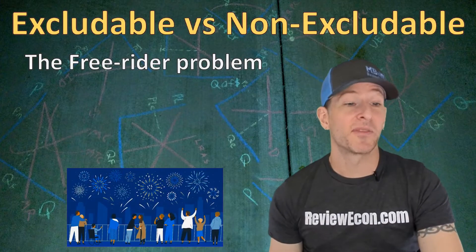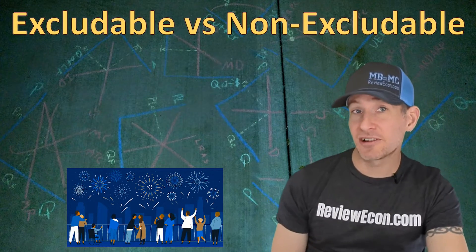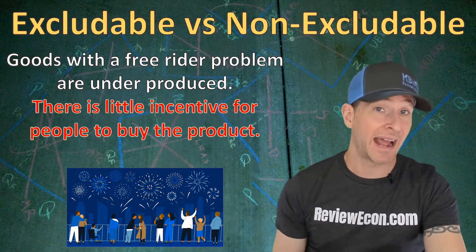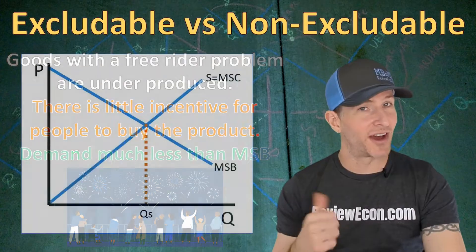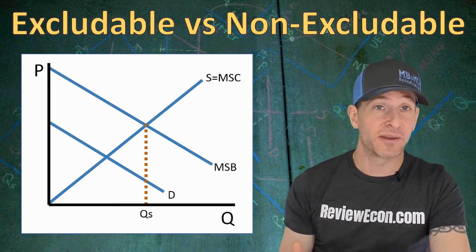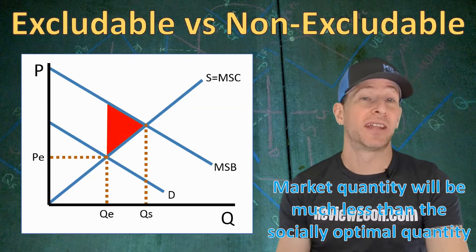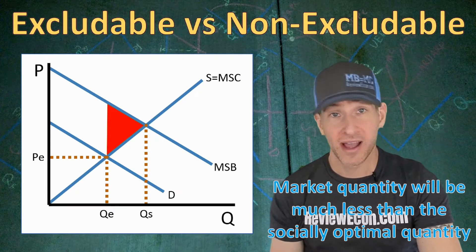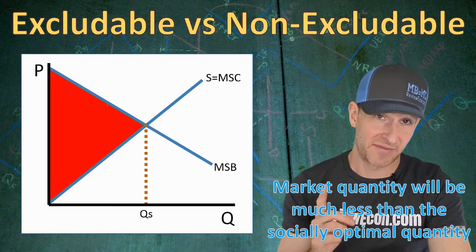The problem with non-excludable goods is they suffer from the free rider problem. Free riders are people who enjoy the benefits of a good without paying for them, and this causes goods to be underproduced. There is little incentive for people to buy the product when they can enjoy it without paying, so demand will be abnormally low — much lower than the marginal social benefit. On a graph, the free market equilibrium quantity QE will be much lower than the socially optimal quantity QS, producing a triangle of deadweight loss. If enjoying the good without paying is easy enough, there could be no demand at all, meaning the market produces zero units.